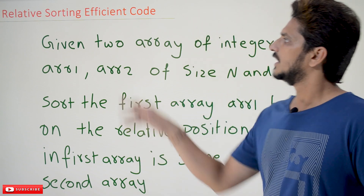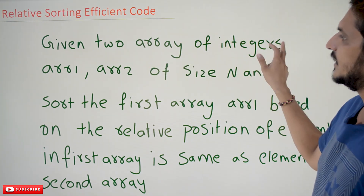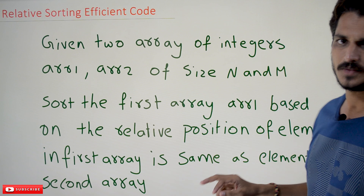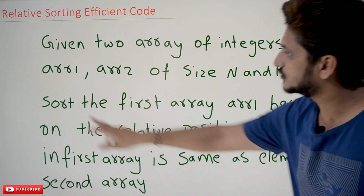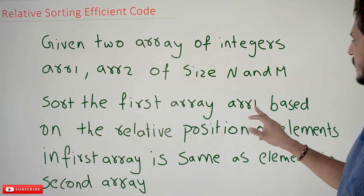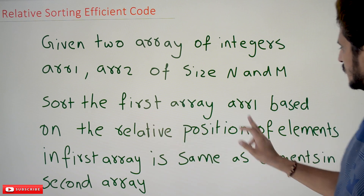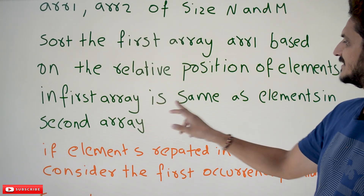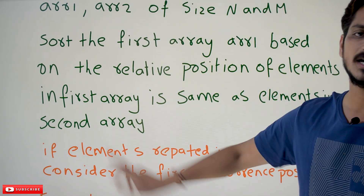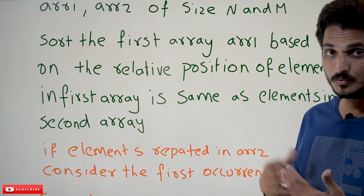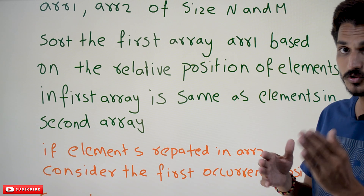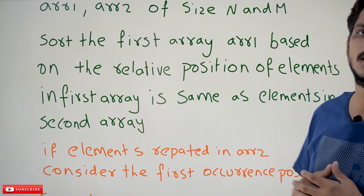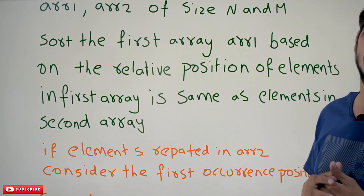Coming to today's example: given two arrays of integers, array 1 and array 2 of size n and m. Our task here is to sort the first array — array 1 — based on the relative position such that the position of elements in the first array is the same as the elements in the second array. We need to sort the first array elements based on the second array elements' positions. That is what relative sorting means.